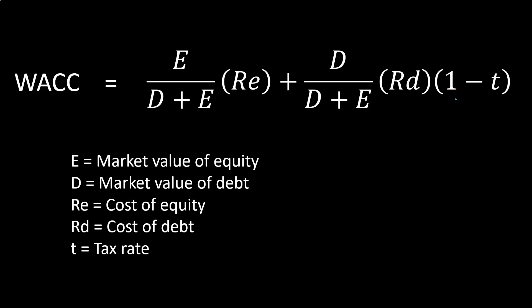The basic idea of the formula is that we're looking at financing options. There are two major categories: debt financing and equity financing. Once we think about debt and equity financing, we want to think about how we can compare those options — putting them into the same type of format, comparing apples to apples, so that we can do that type of comparison.